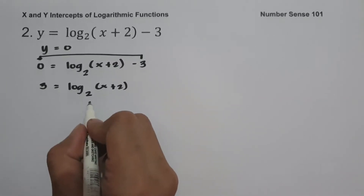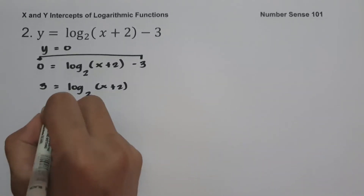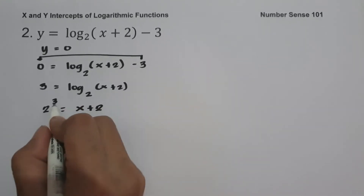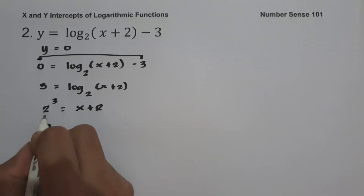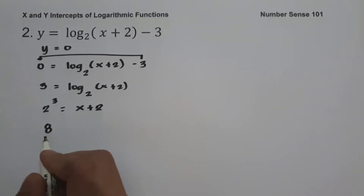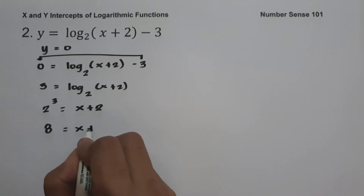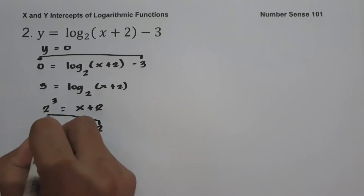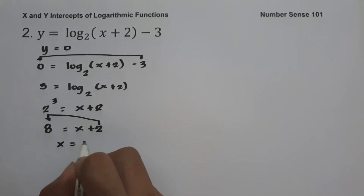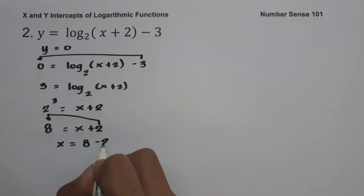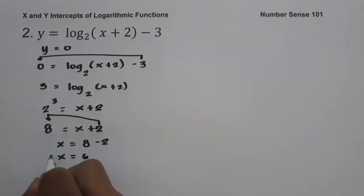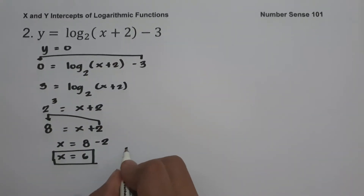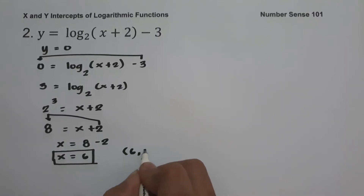Let us write this in exponential form. So this will be 2 raised to 3 equals x plus 2. 2 raised to 3 is 8 — that means you multiply 2 three times by itself, which is 8. So we have 8 equals x plus 2. Let us move 2 to the side of 8, giving us x equals 8 minus 2, and that is 6. Since the value of y is 0 and x is 6, our x-intercept is (6, 0).